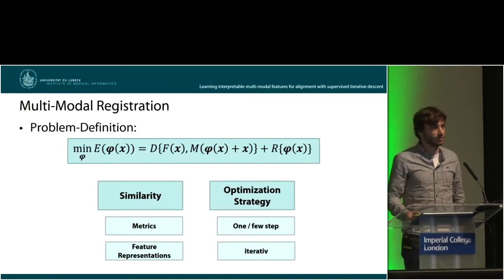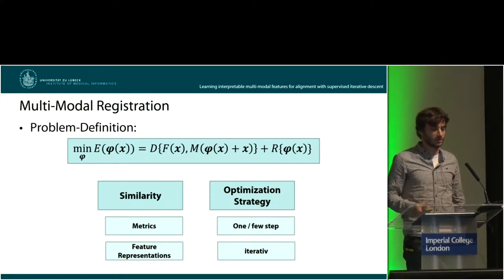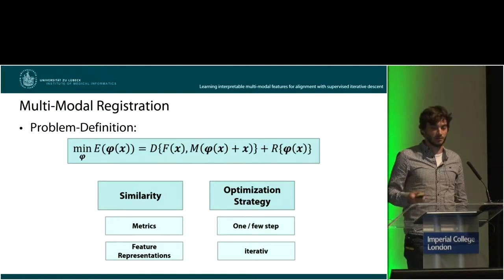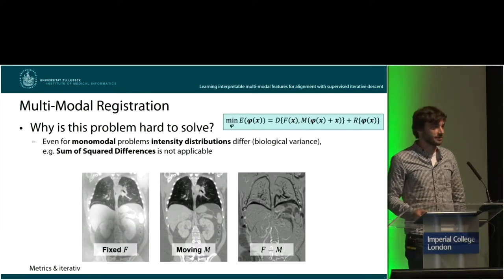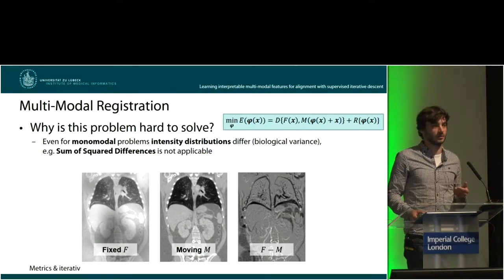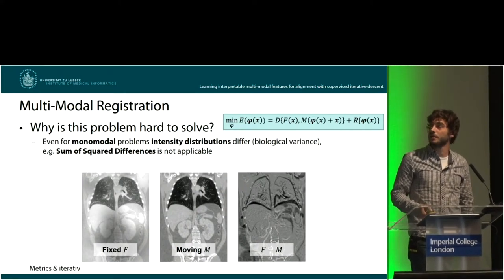On the next few slides I will give you a short overview of related work, grouped by two categories: how these methods assess the similarity of images, and the optimization strategy they use — whether they use one path or have many iterations. Not only for multimodal but also monomodal images, you can observe problems like differing intensity distributions between scans caused by biological variance between patients. This is why most of the time simple metrics like the sum of squared differences are not applicable.